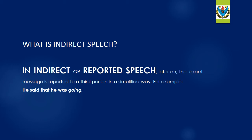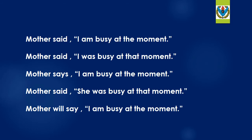Let's look at the structure of direct speech. Look at the first sentence: 'Mother said, quote, I am busy at the moment, unquote.' All direct sentences have a similar kind of structure. Every direct sentence has two parts: reporting speech and reported speech. 'Mother said' is the reporting speech. 'I'm busy at the moment' is the reported speech. It is always separated by a comma and enclosed by inverted commas. The first letter of the reported speech is always capital.